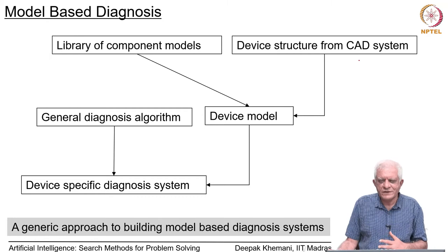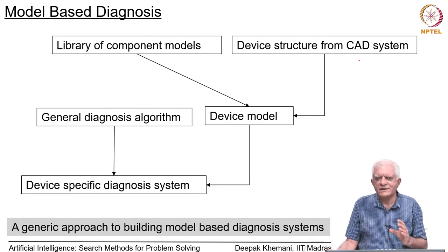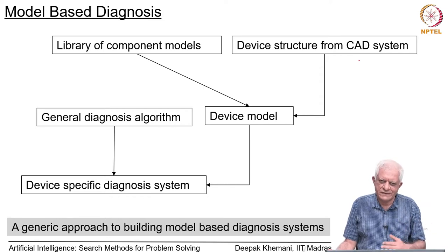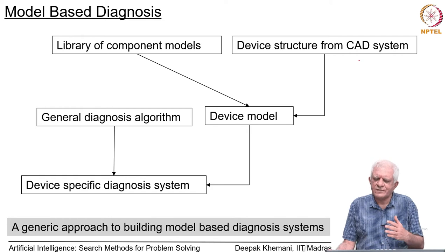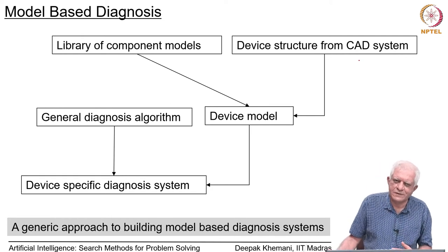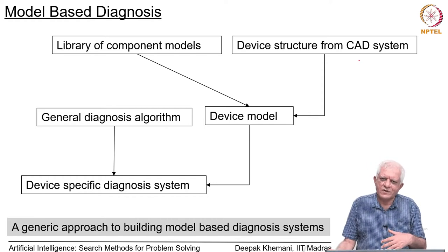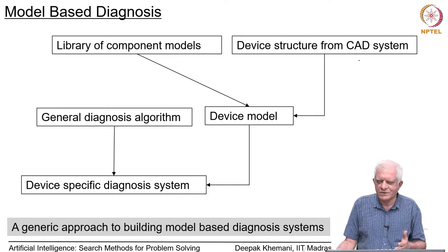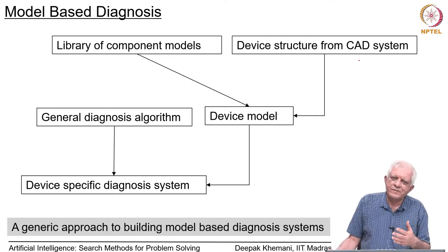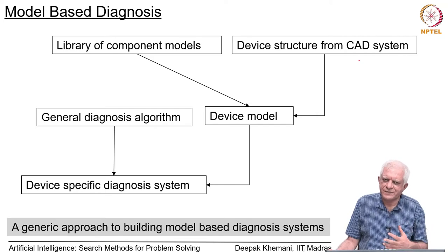Model-based diagnosis takes a more first-principles approach, consistent with what we are doing in this entire course — search is a first-principles approach. You give us a new problem and we will use search to try and solve it. In a knowledge-based approach, if you give similar problems we can solve those, but it is not that one is better than the other. Eventually you will have to do a combination, because knowledge-based systems are going to be faster than search, given the combinatorial explosion.